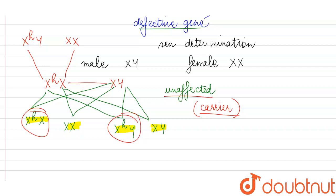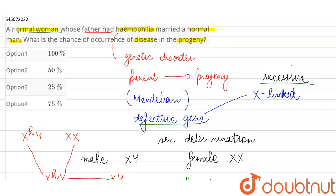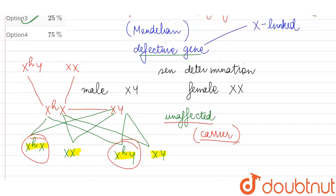So out of the four possibilities, only one of the male children is showing haemophilia - only 25% chance of haemophilic child. So we are going to say option C is our correct answer.